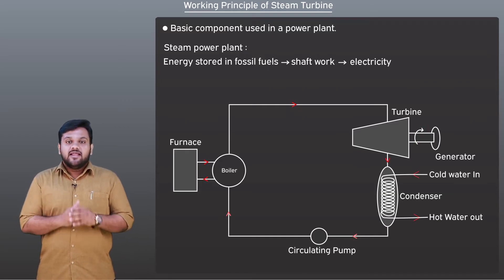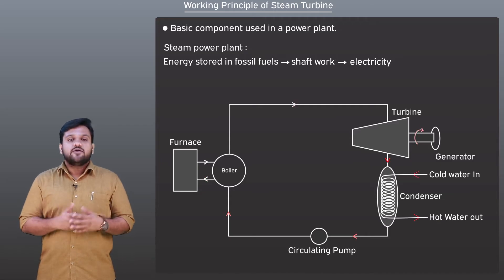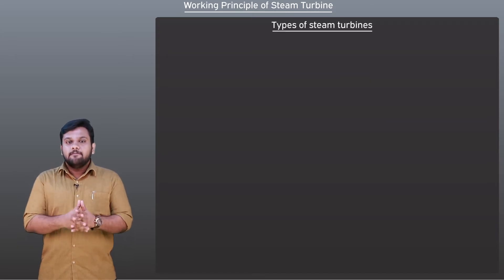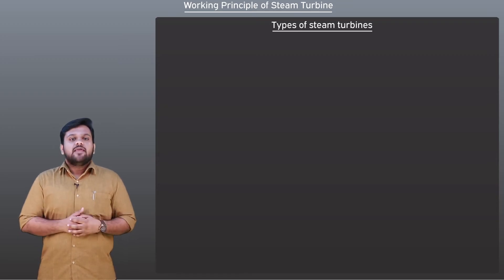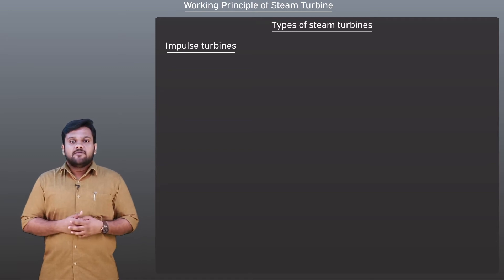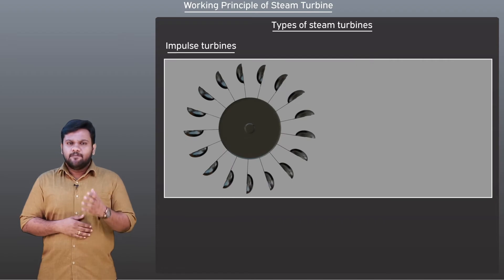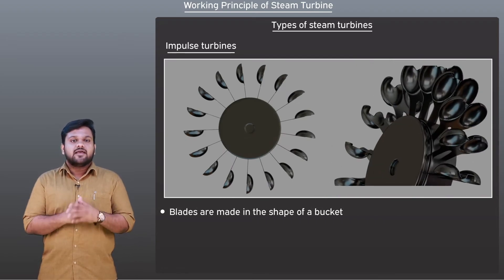The expansion of high pressure steam in the turbine causes the rotation of the turbine blades, which produces the shaft work. There are mainly two types of steam turbines: impulse turbine and reaction turbine. To understand the working of an impulse turbine, let's observe the steam turbine blades. The blades of the steam turbine are made in the shape of a bucket.